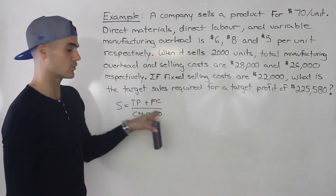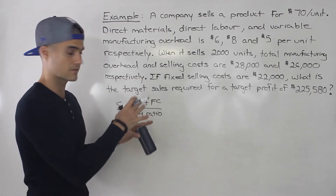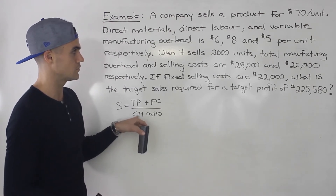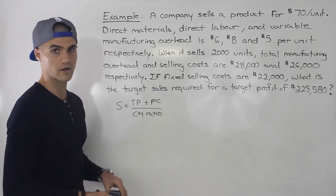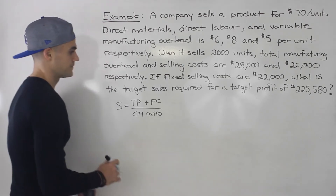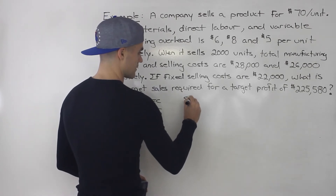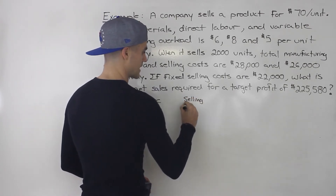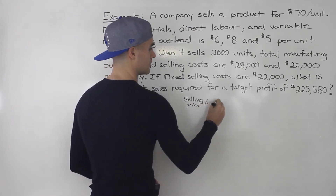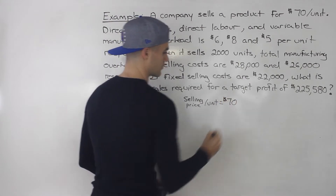We don't have the total fixed costs given anywhere — it's kind of just scattered. And the contribution margin ratio we don't have directly either; we're going to have to find that. So let's find some stuff. We know that the selling price per unit is given at $70 per unit.